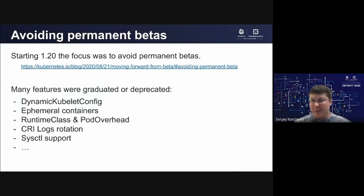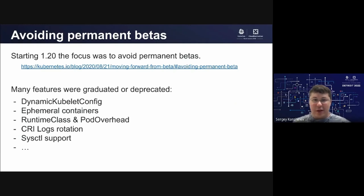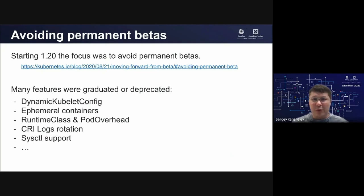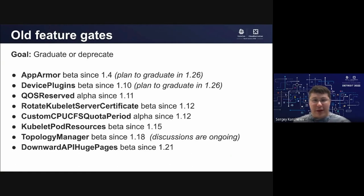Recently, starting from 1.20, we've been focusing on eliminating permanent betas. A permanent beta is a feature that enters the beta stage, where we start collecting feedback and accumulate many customers and usages of the feature, but never make it to official GA. This creates confusion among customers and is generally bad software practice. So we deliberately tried to eliminate betas, as well as doing other major deprecations like the dockershim removal. We removed GA'ed features and graduated features that were already being used but never officially called GA. But the work is not complete yet — we still have a few feature gates still in beta, some going all the way back to Kubernetes 1.4.